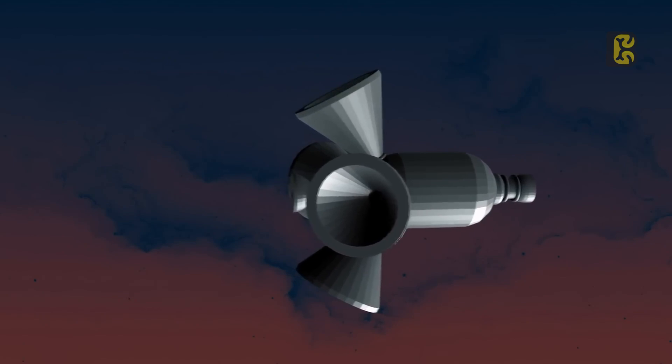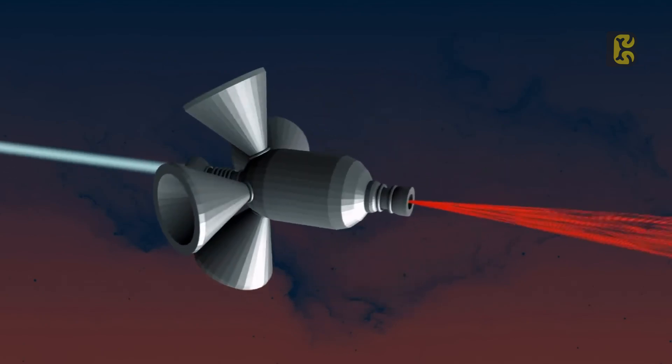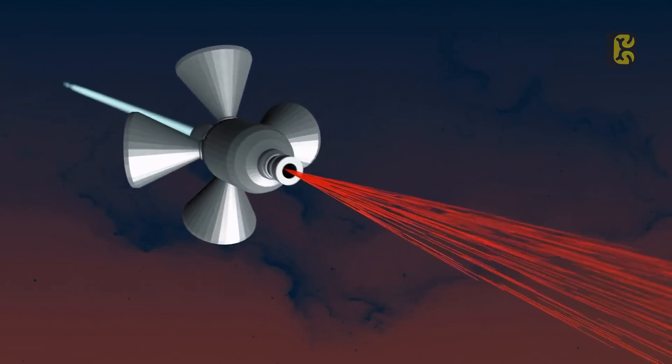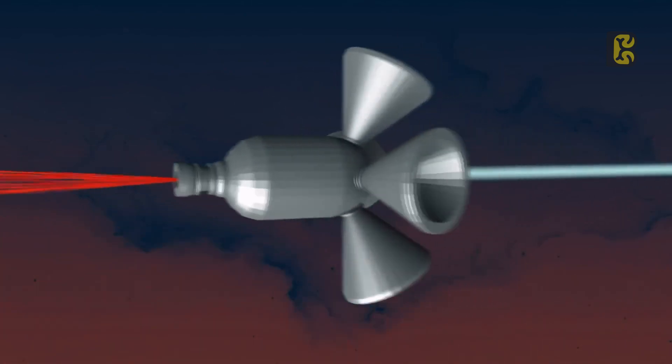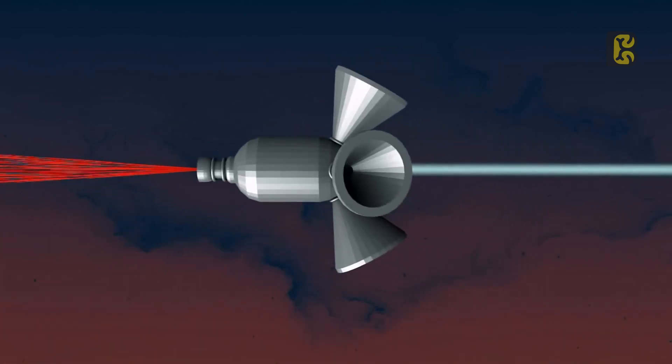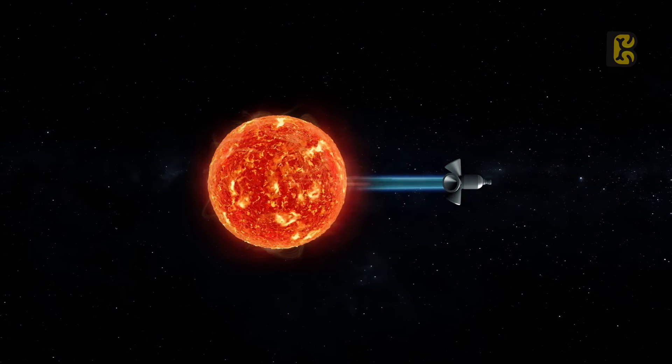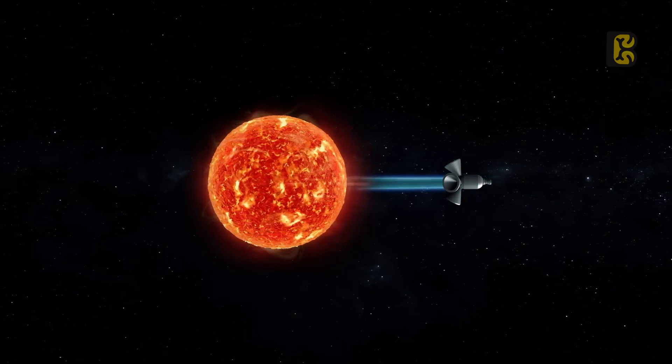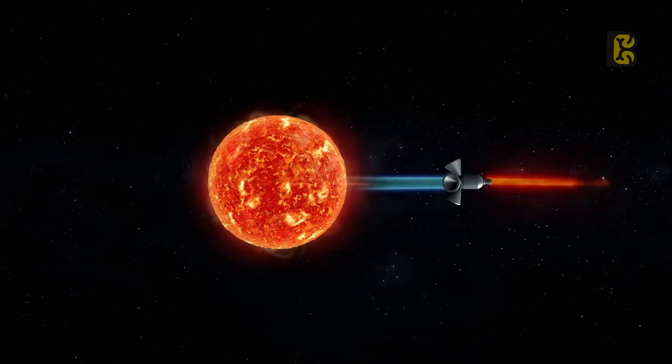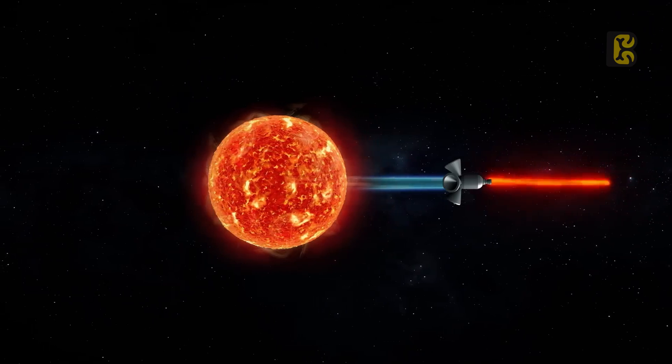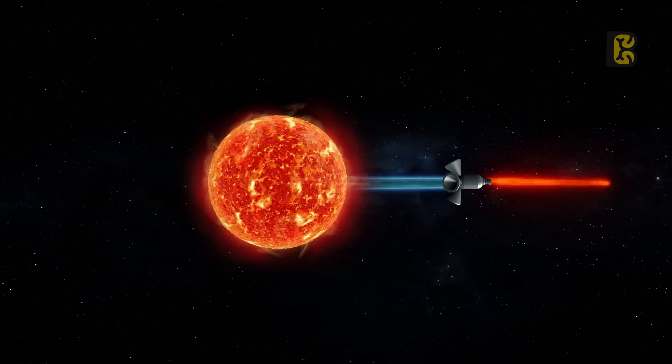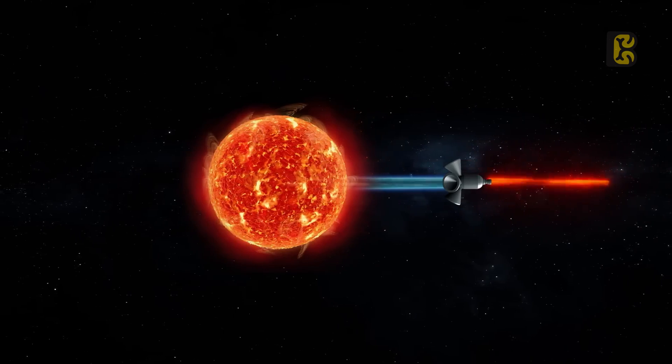He proposed that we would launch a large particle accelerator into space that would shoot bunches of particles at the Sun at near light speed. Now, since these particles traveling at near light speed would have no shortage of kinetic energy, as soon as they impact the Sun's surface, they would initiate high-energy fusion reactions that would produce such fast and energetic solar jets that they would push the Sun from its current position.